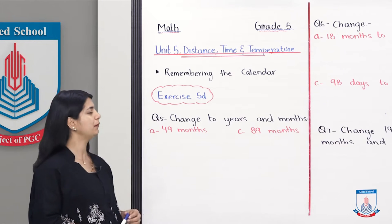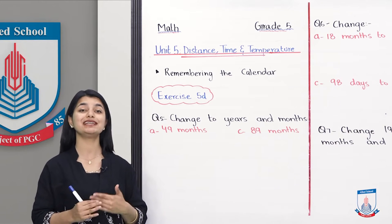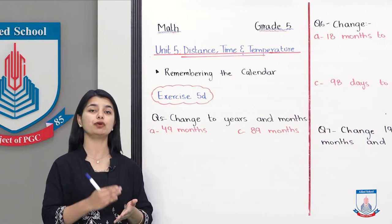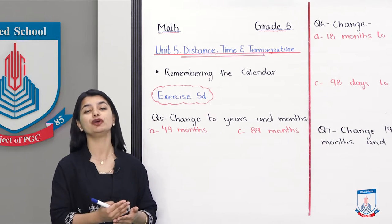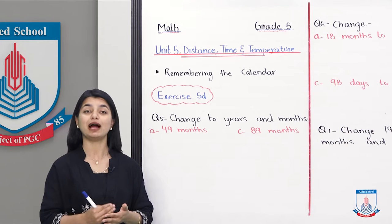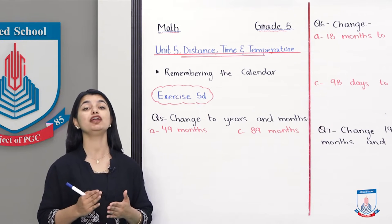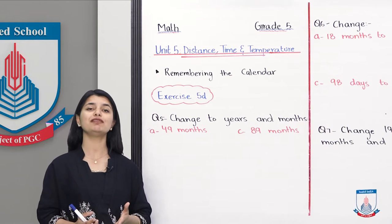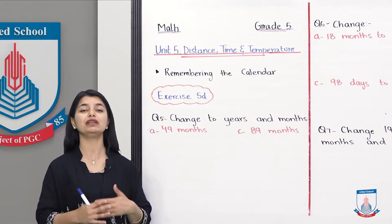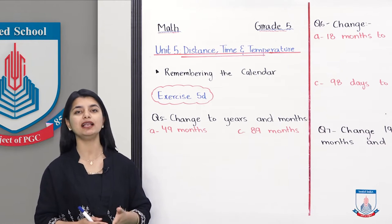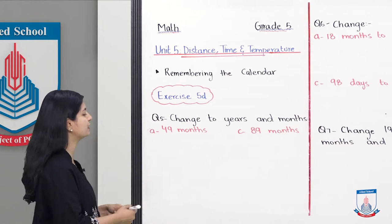If we look at Part A: 49 months — we have to convert to Years and Months. We are going from a smaller unit to a bigger unit, so what will we do? We will divide. We will divide by 12. Why do we divide by 12? Because 1 year has 12 months. So if we know the number of months, we divide by 12 to find the years.